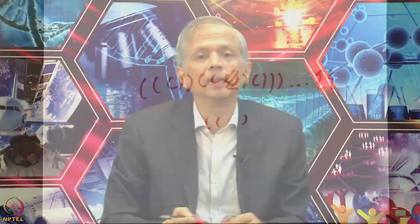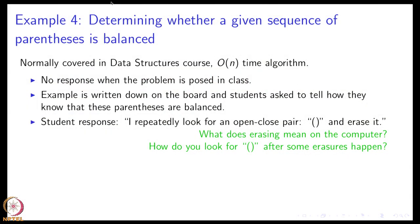Things get a little complicated. Once you erase something, what does it mean to look for adjacent open and closed parenthesis? You have to amend your definition and say that when I am looking for an open close pair, adjacent open close pair, I am allowing spaces to be in between the opening parenthesis and the closed parenthesis.